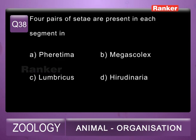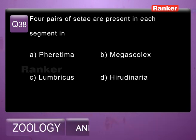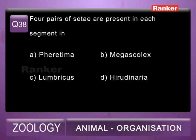38th question: four pairs of setae are present in each segment in A) Pheretima, B) Megascolex, C) Lumbricus, D) Radinaria.